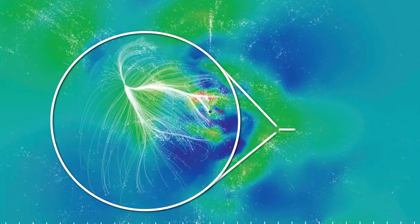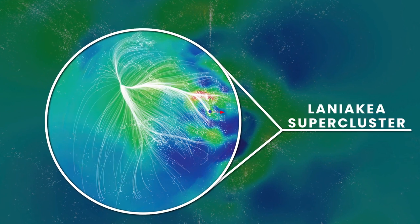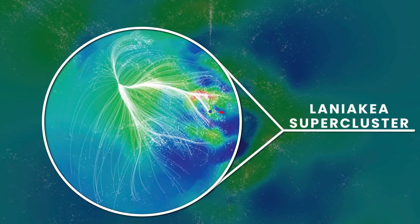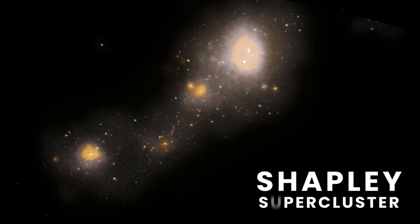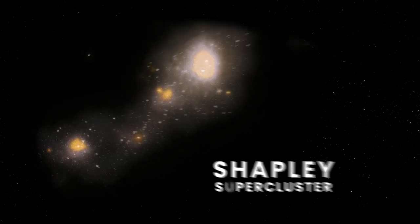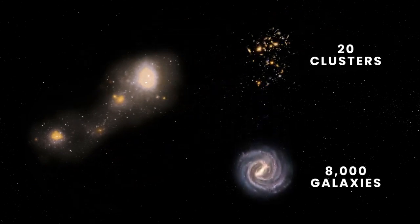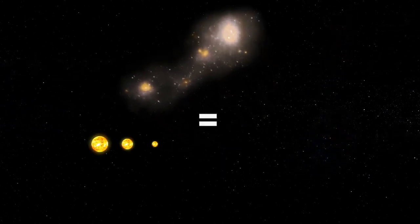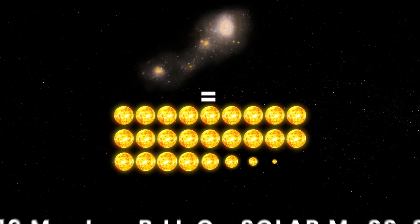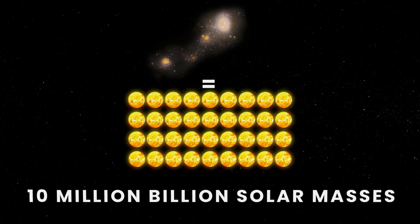So what then draws them to the center of the Laniakea supercluster? Looking for answers, scientists began searching for a structure with a more powerful gravitational pull, and soon succeeded. This is the Shapley supercluster, a collection of approximately 20 clusters consisting of 8,000 galaxies about 650 million light-years from Earth. This supercluster encompasses 10 million billion solar masses. It's the most massive formation within a billion light-years from the Milky Way.